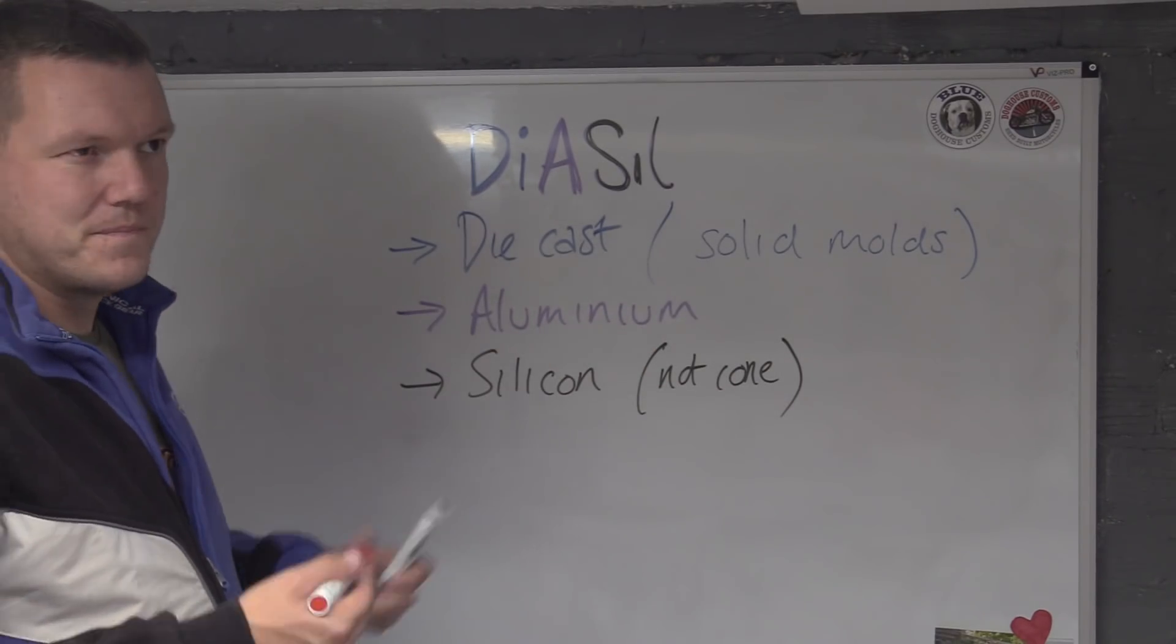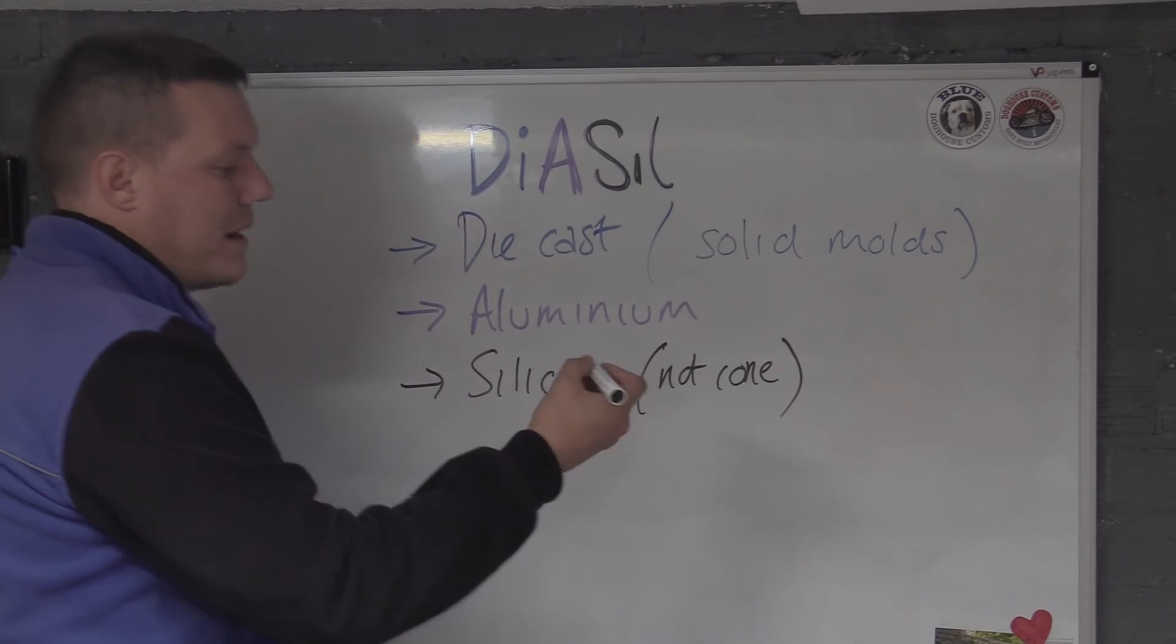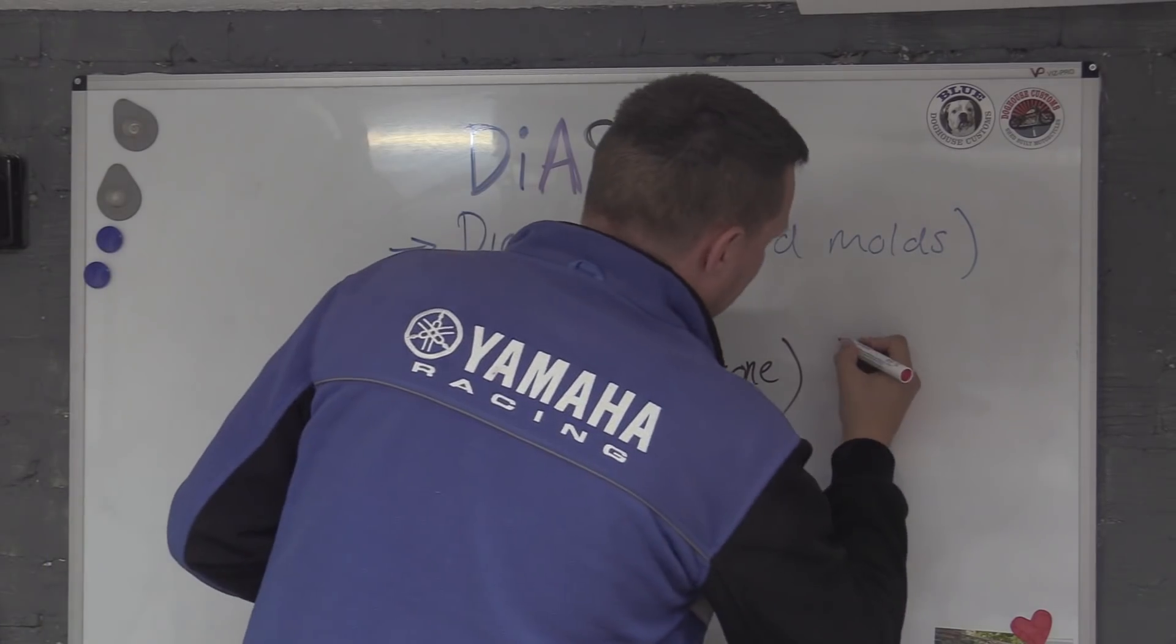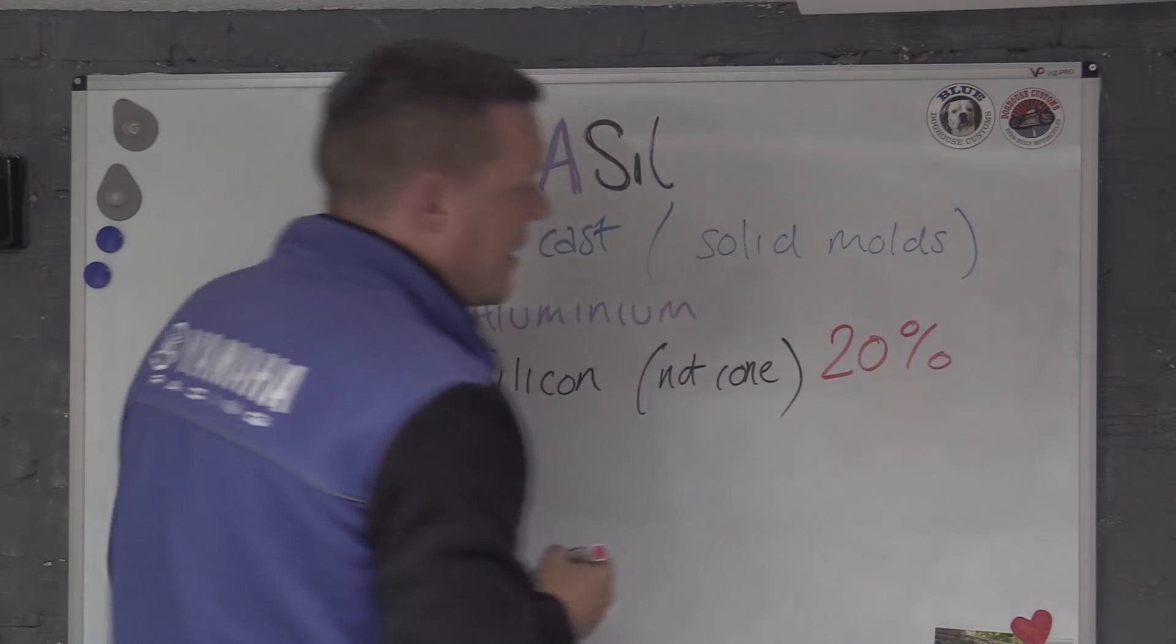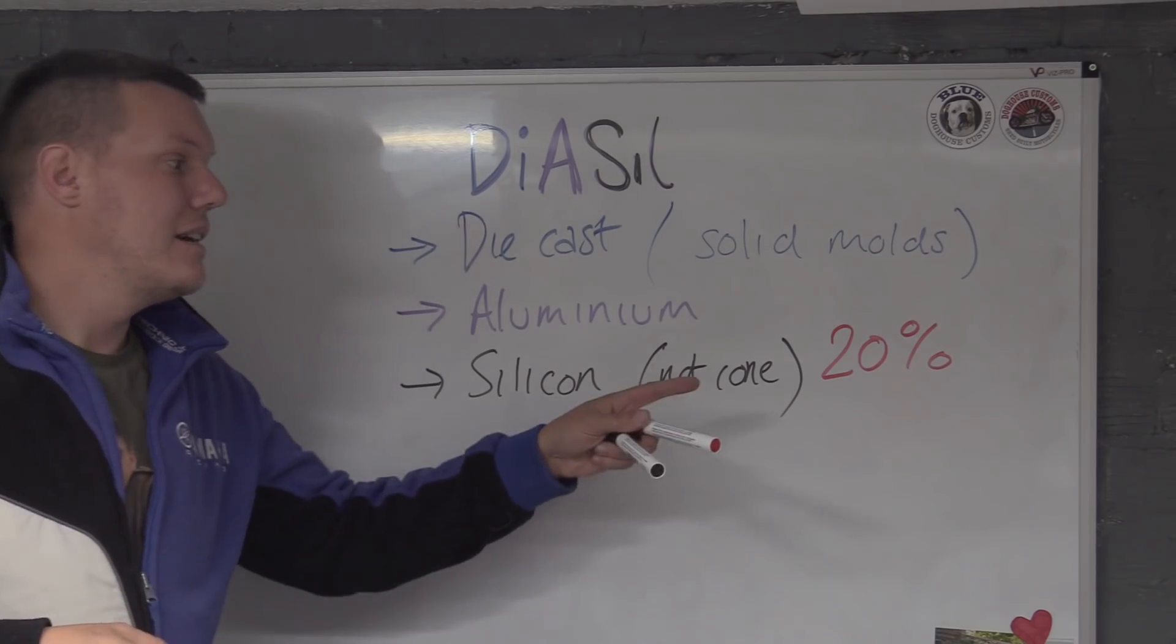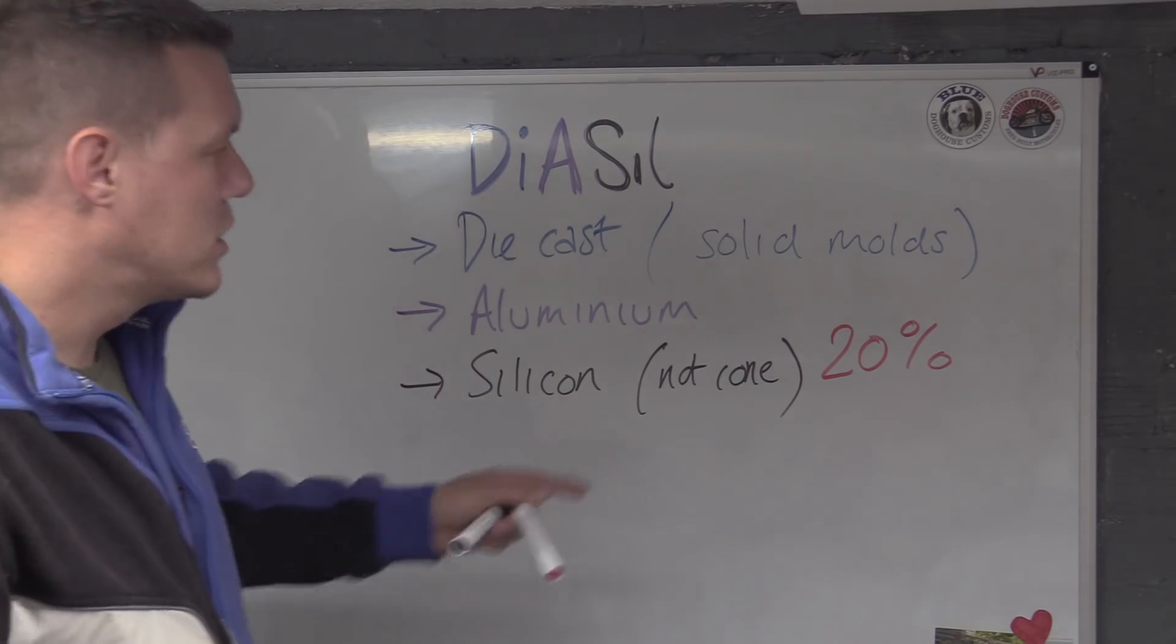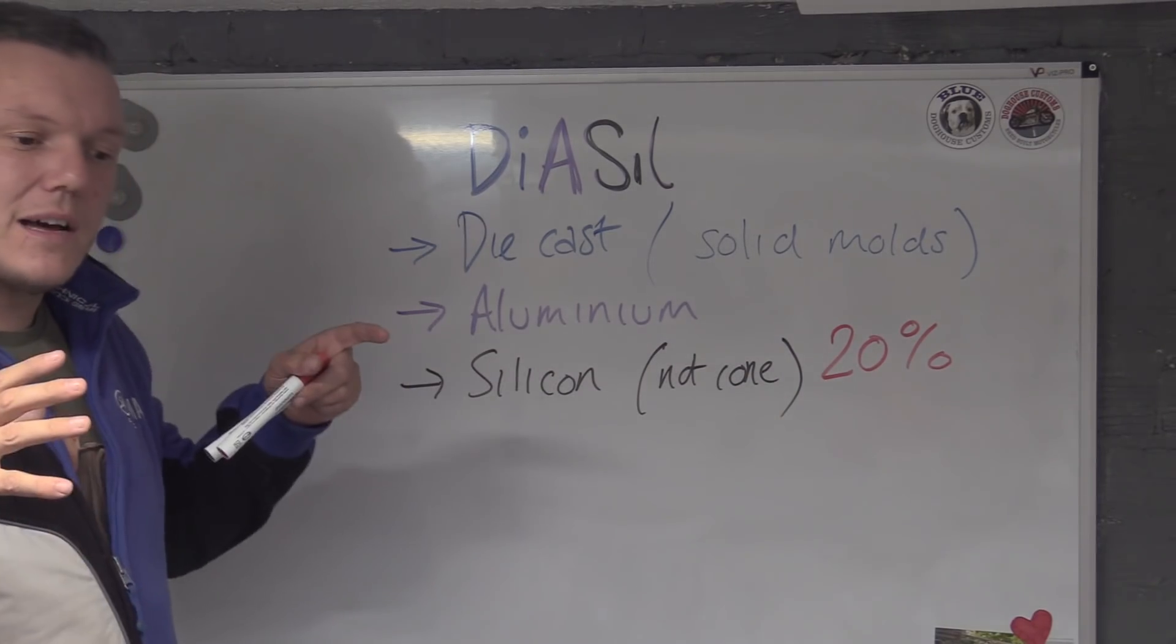The aluminum is die cast aluminum, but it's the silicon bit, and the reason why it's a bit sexy is because it's 20%. It's 20% silicon. Now you might have heard of hypereutectic pistons, and they're around about above 12%. 20% is really quite high.